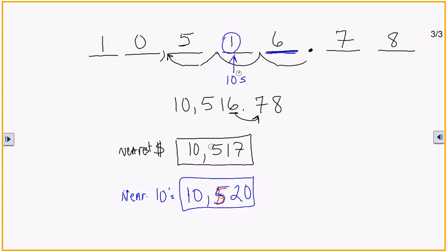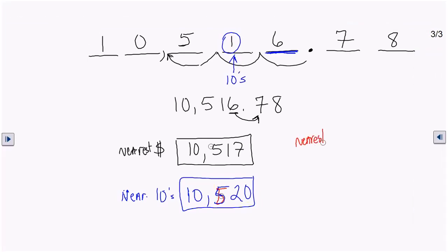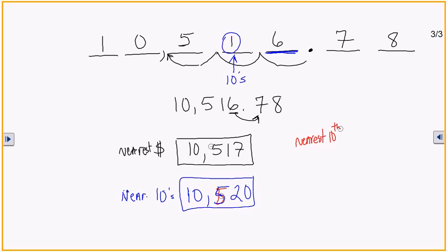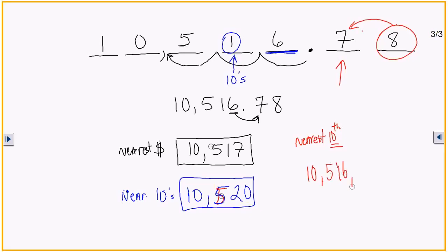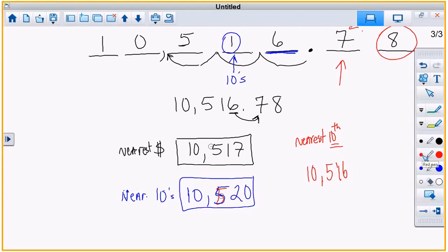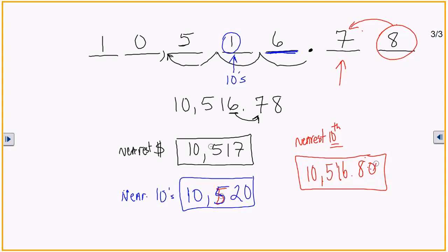Now round to the nearest tenth — notice this time it's tenth, not ten. That means I'm looking at the digit in the tenths place, which is seven, and then looking at the digit to its right. That digit is eight, which is five or above, so I bump the seven up to an eight. Rounded to the nearest tenth, the answer is ten thousand five hundred and sixteen dollars and eighty cents.